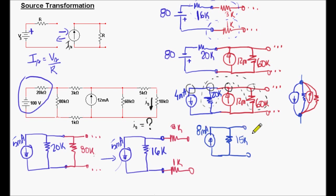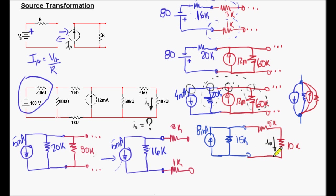Now we are going to add the rest of the circuit — here we have our 5k, 10k, and the current we are trying to find, which is I sub zero. Can we combine the 15k with 5k or 10k? No, we cannot. So we need to perform source transformation once more.